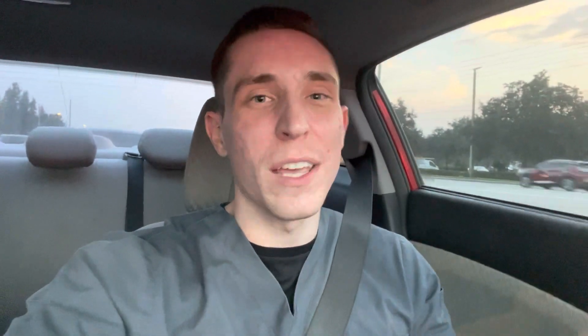Another thing about babies is that their background rhythm — which in adults is an alpha rhythm between 8 and 12 hertz — in a baby it's normal in the waking state to be more in the theta-delta range until their brain matures, and then it can get up to that 8 to 12 hertz marker.